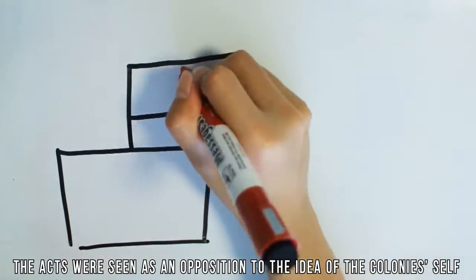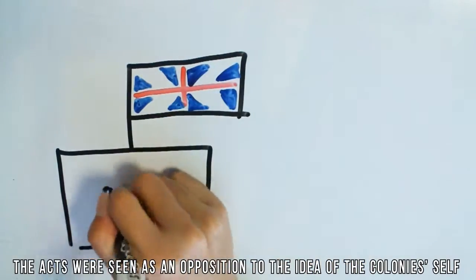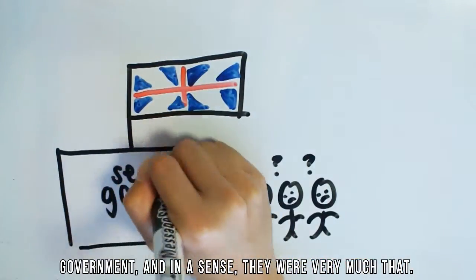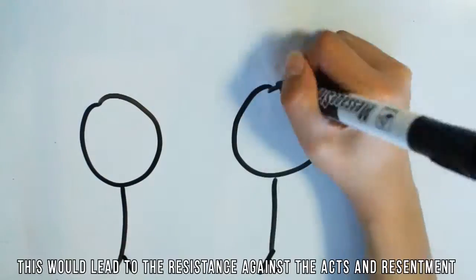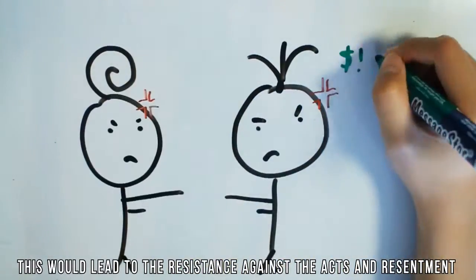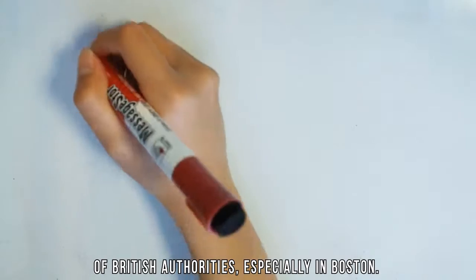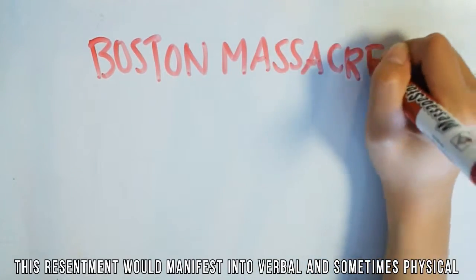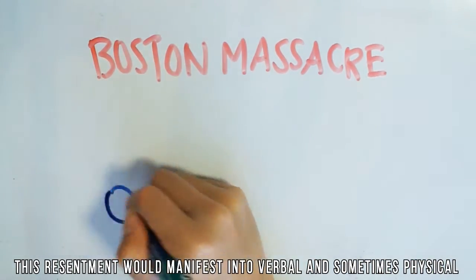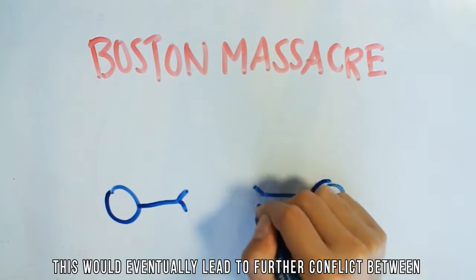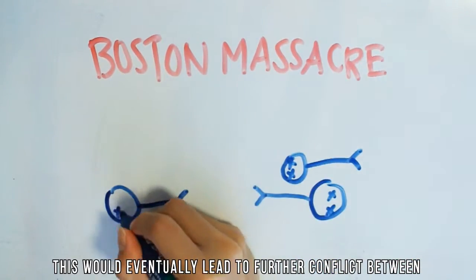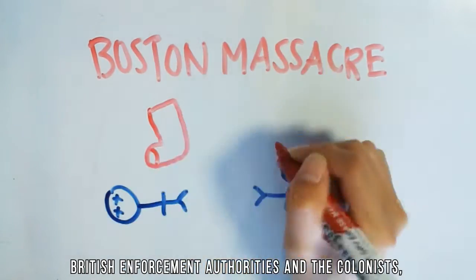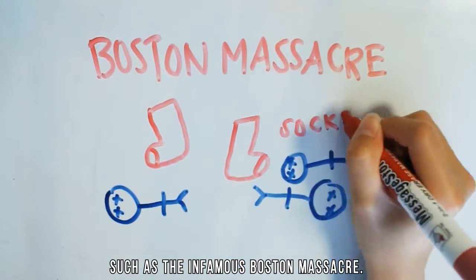The acts were seen as an opposition to the idea of the colonists' self-government, and in a sense they were very much that. This would lead to resistance against the acts and resentment of British authorities, especially in Boston. This resentment would manifest into verbal and sometimes physical attacks, eventually leading to further conflict between British enforcement authorities and the colonists, such as the infamous Boston Massacre.